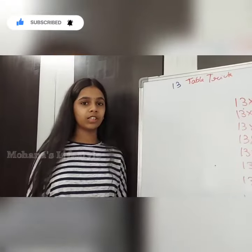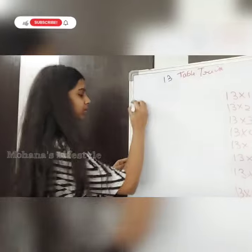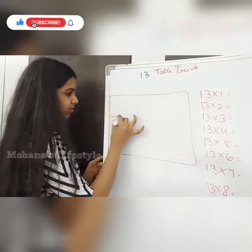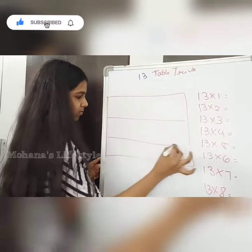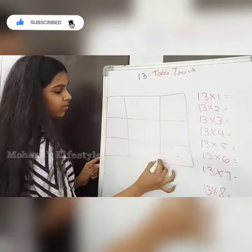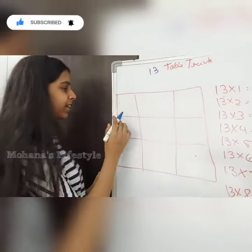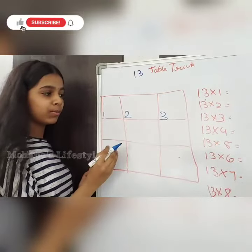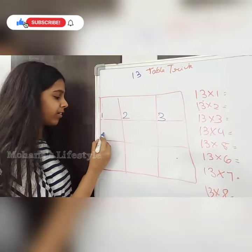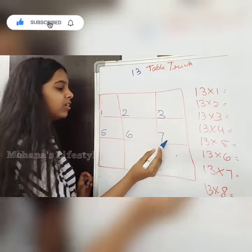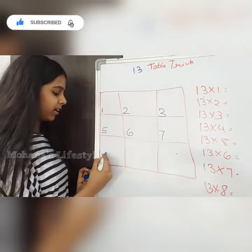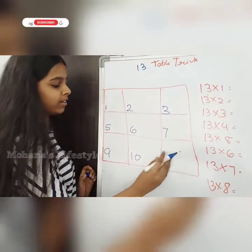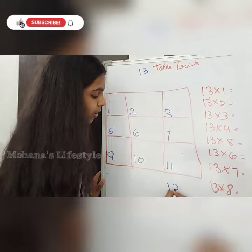Now we are going to look at the table 13 trick. For that, you are going to draw a table. On the left side, write 1, 2, 3, skip 4, write 5, 6, 7, skip 8, write 9, 10, 11, skip 12, and write 13.